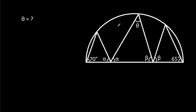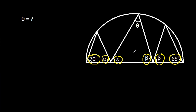In this video, we have been given a semicircle in which this angle is 70 degrees, this angle is 65 degrees, and these two angles are alpha and these two angles are beta. We have to find angle theta.